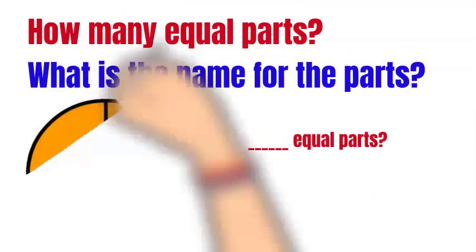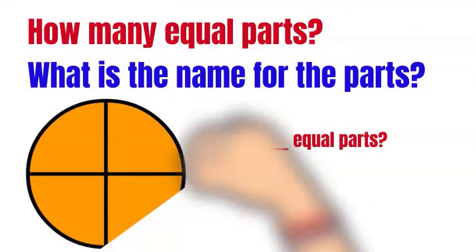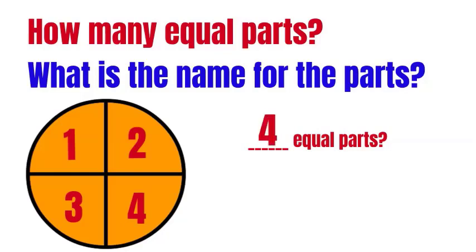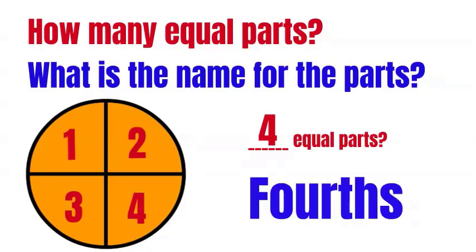Again, how many equal parts and what is the name for the parts? We've got one, two, three, four — we have a total of four equal parts. What do we call four equal parts? Fourths.